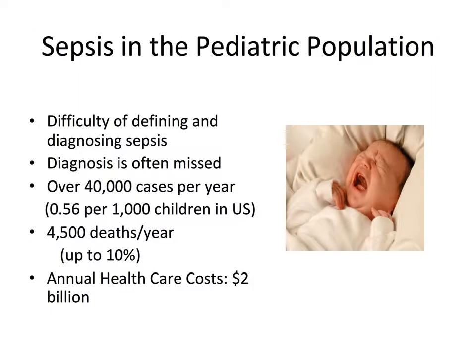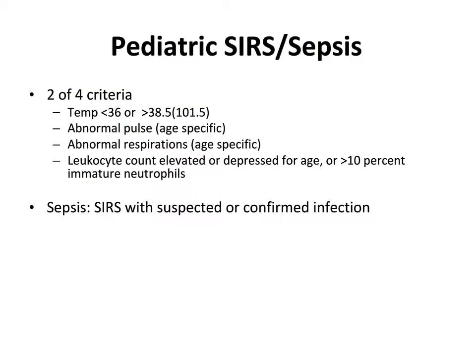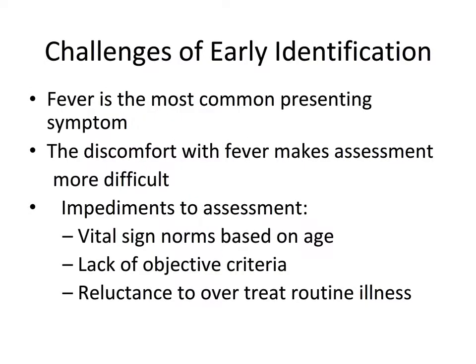Part two of our program addresses pediatric patients. Defining and diagnosing sepsis in these patients is challenging — there are over 40,000 cases per year with approximately a 10% death rate and annual healthcare costs of $2 billion. A SIRS alert will also fire for a pediatric patient with temperatures less than 36°C or greater than 38.5°C, abnormal pulse and respirations which are age-specific, and leukocyte counts that are either elevated, depressed, or have greater than 10% immature neutrophils. Fever is the most common presenting symptom, and discomfort with fever makes assessment more difficult. Impediments include vital sign norms based on age, lack of objective criteria, reluctance to over-treat routine illness like otitis media, and the known resilience of an otherwise healthy child.